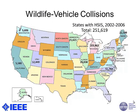First of all, why such a system? Why do we need to do animal detection? The motivation is that there are actually a lot of wildlife animal-vehicle collisions. This slide shows statistics from the United States over a period of five years between 2002 and 2006, covering eight states which have HSIS, the Highway Safety Information System.